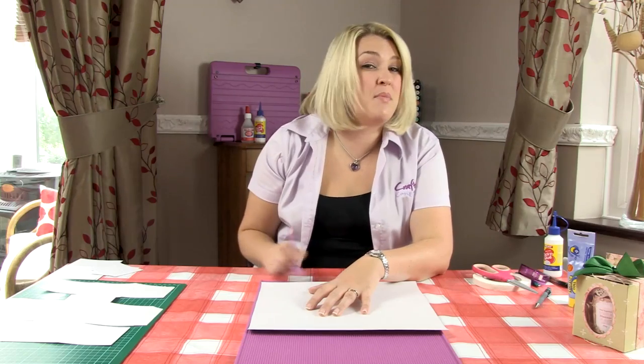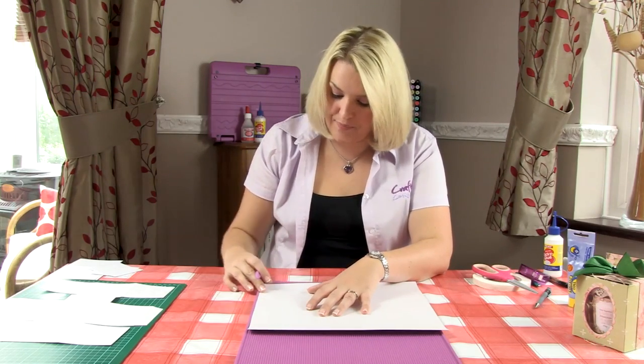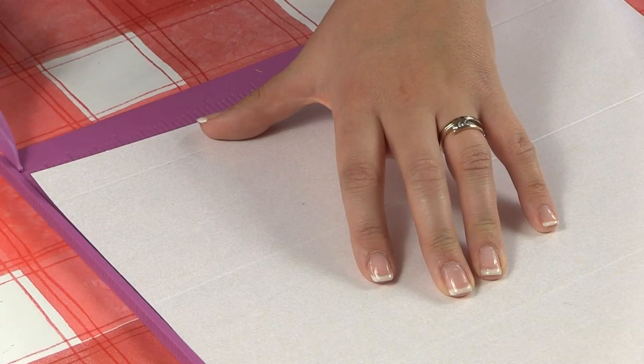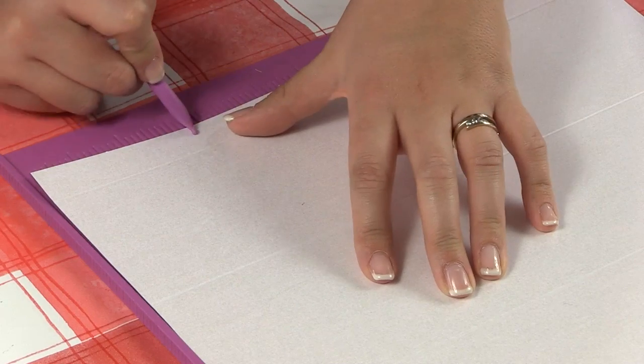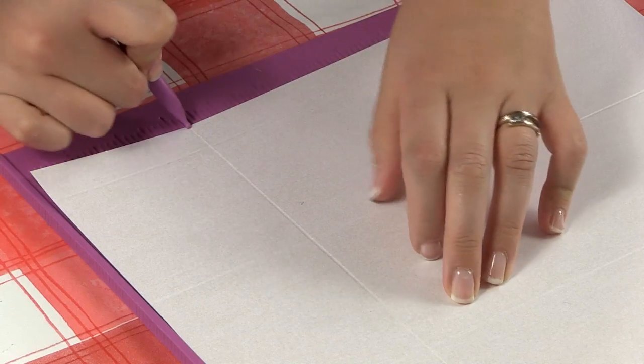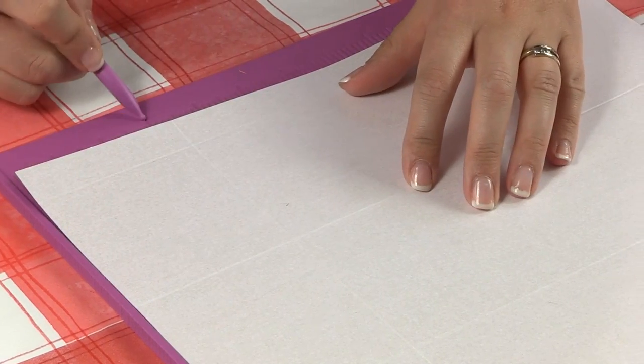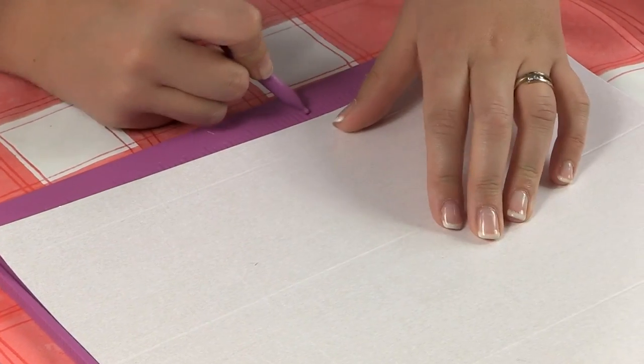We're actually only going to use the box base measurement for the first one. From box base you're going to come to three and a quarter inches, and you score all the way up. Then you're going to come along to seven and a quarter.